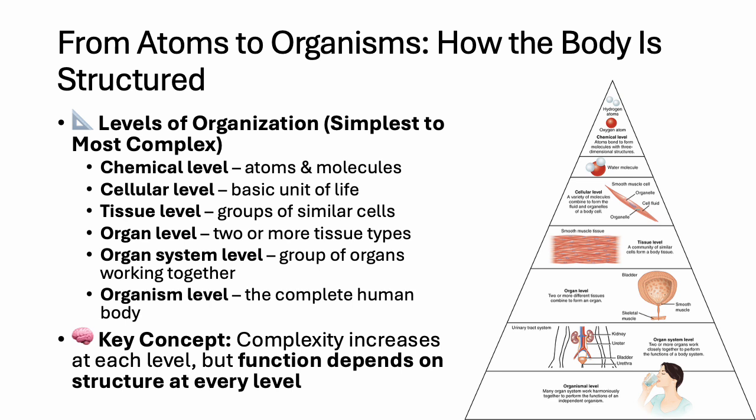Several organs that cooperate to perform a broader function make up an organ system — like the urinary system, which includes the kidneys, ureters, bladder, and urethra. Finally, we arrive at the organism level: the complete human body in which all systems work in harmony. This is the level where everything comes together to maintain homeostasis and allow life to continue. Understanding these levels helps you see how structure builds upon structure, and how problems at even the smallest level can affect the entire body.